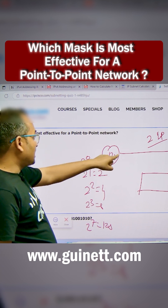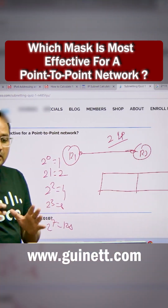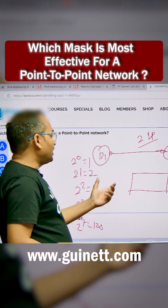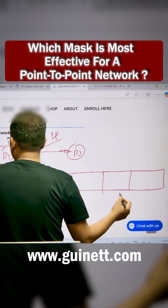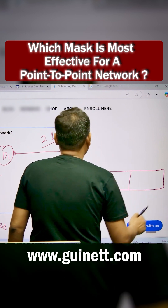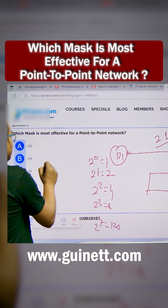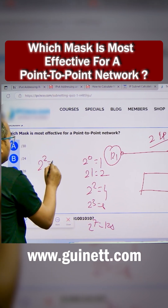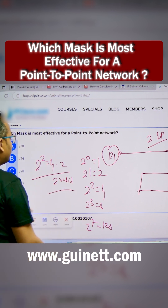I require only two usable IP addresses because this is a point-to-point network — only two IP addresses required, not more than that. For that, I need only two bits to be on from the host portion. I require two valid IP addresses, meaning 2 to the power 2 equals 4, minus 2, equals two valid IP addresses.